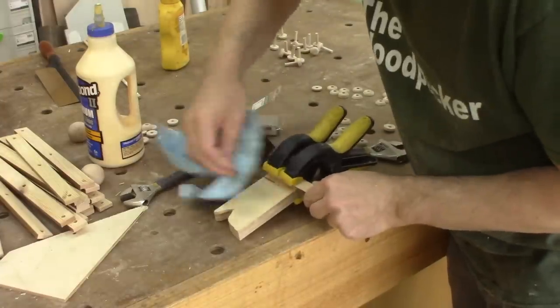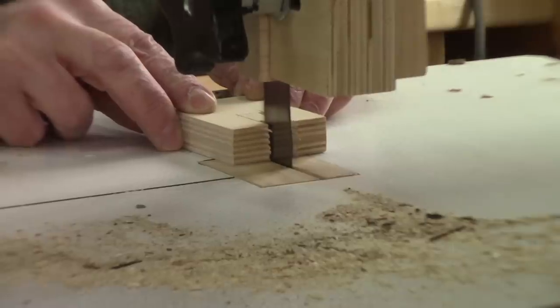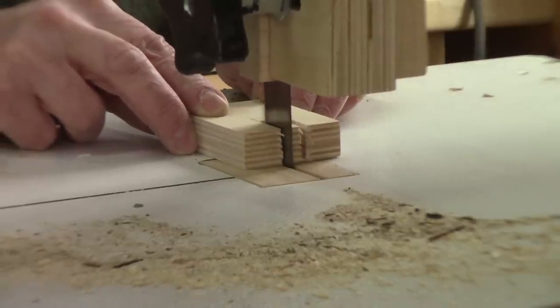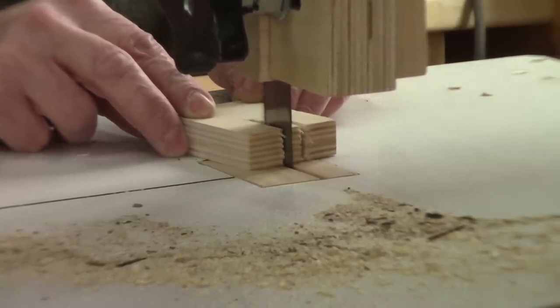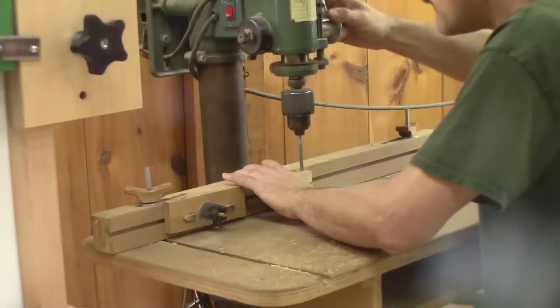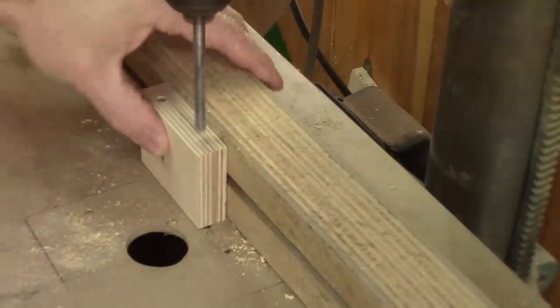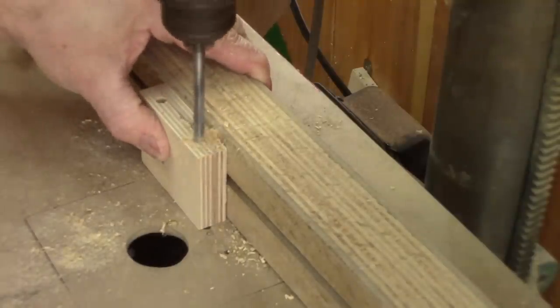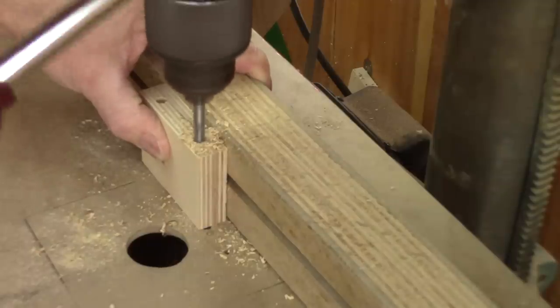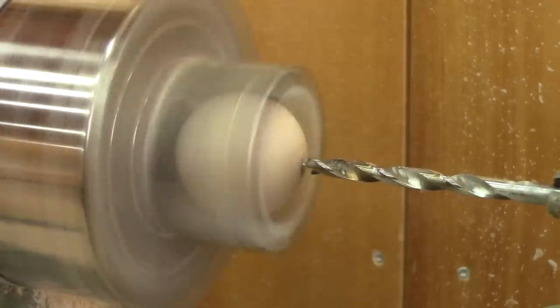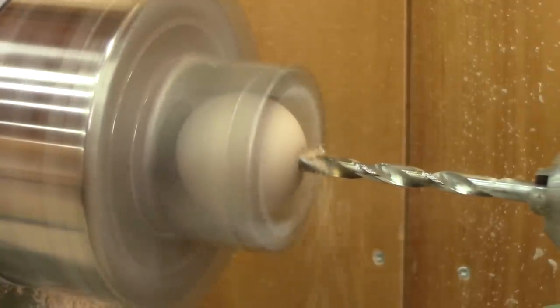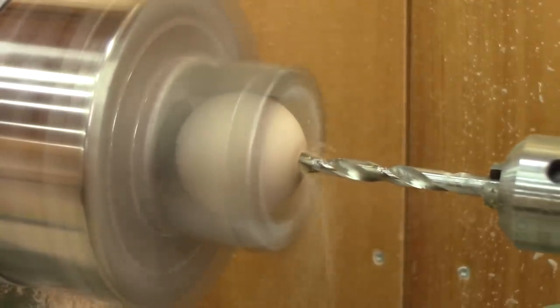While the glue dries, I can start to work on the other side. The one that will be at the end of the bottom scissor. It's exactly like the other one. But to be able to move the head in every direction, I'm going to use two small wooden balls.